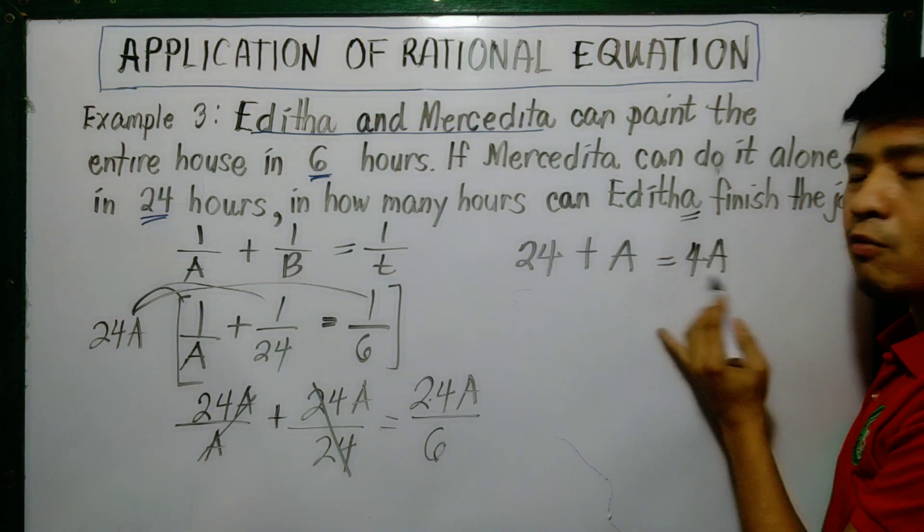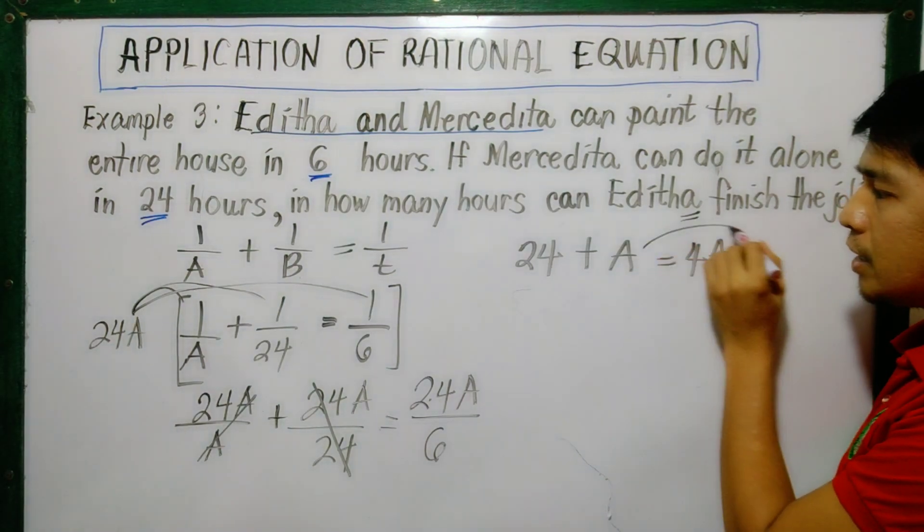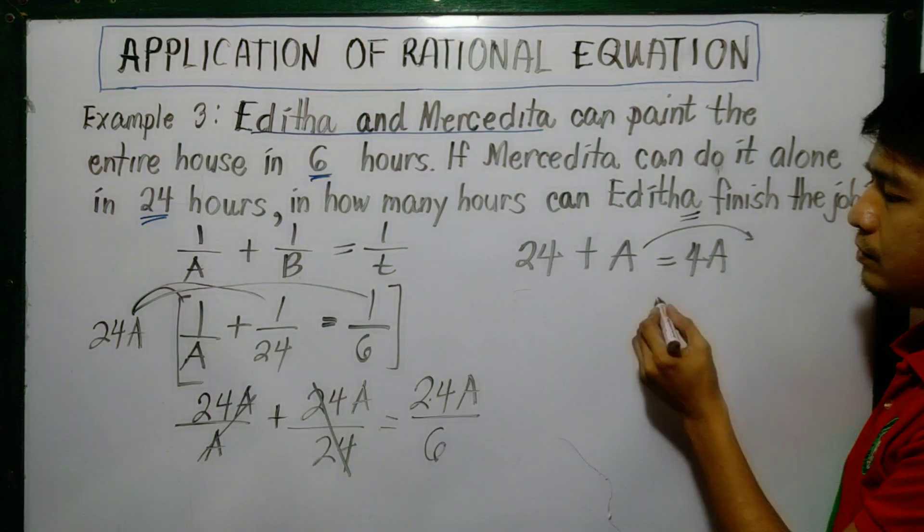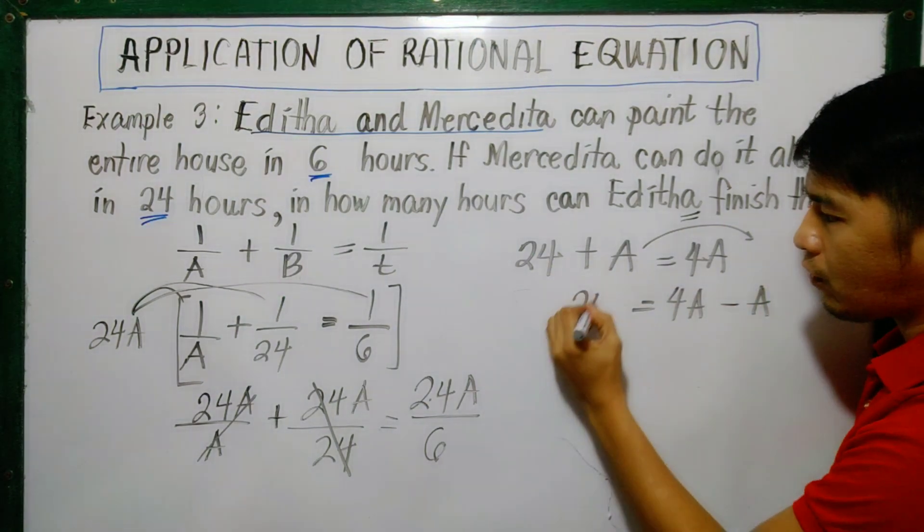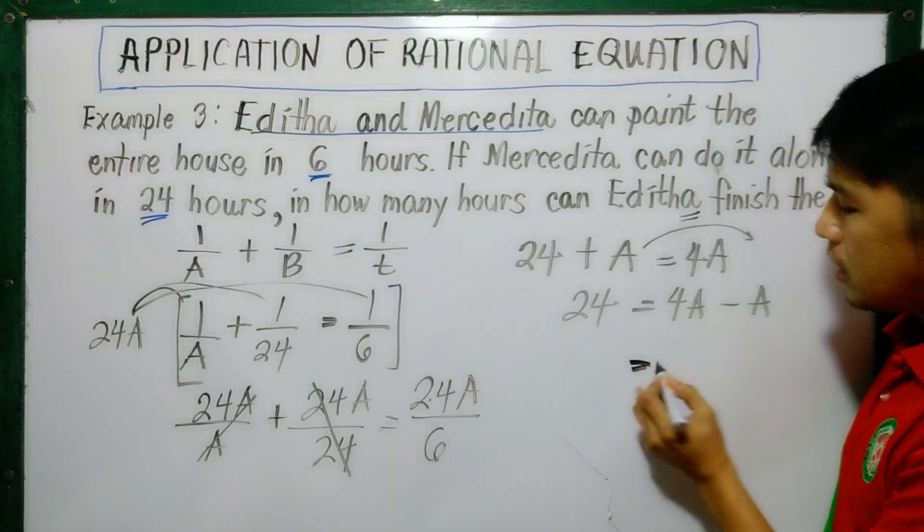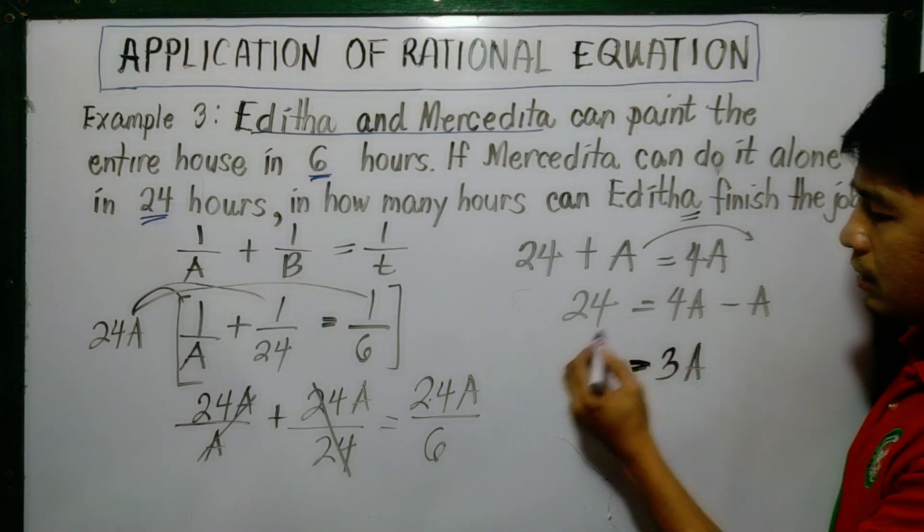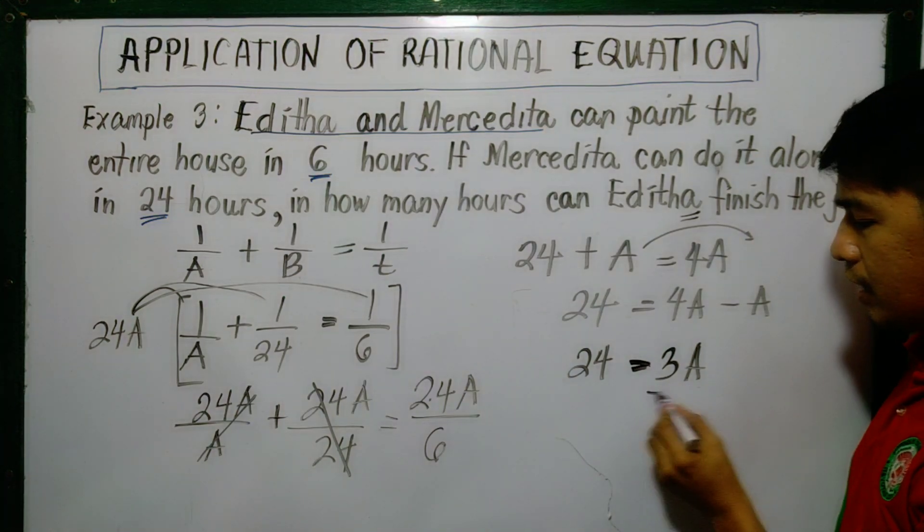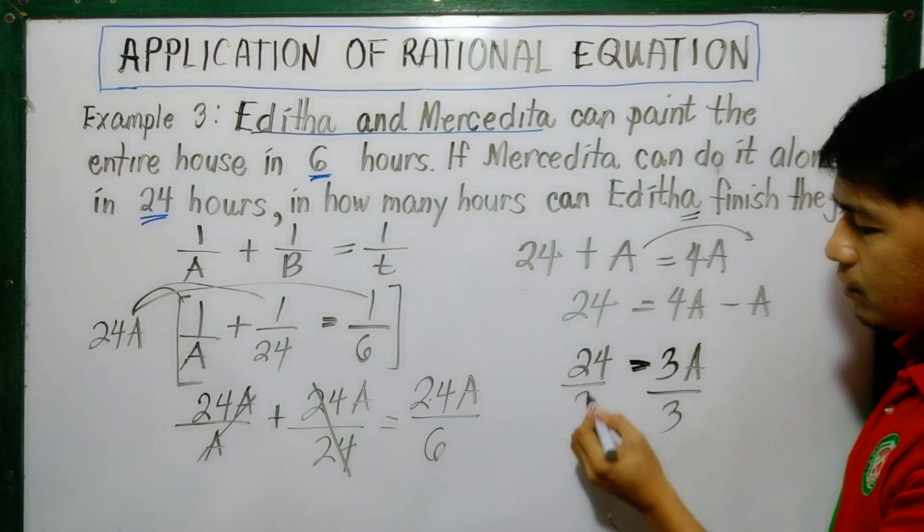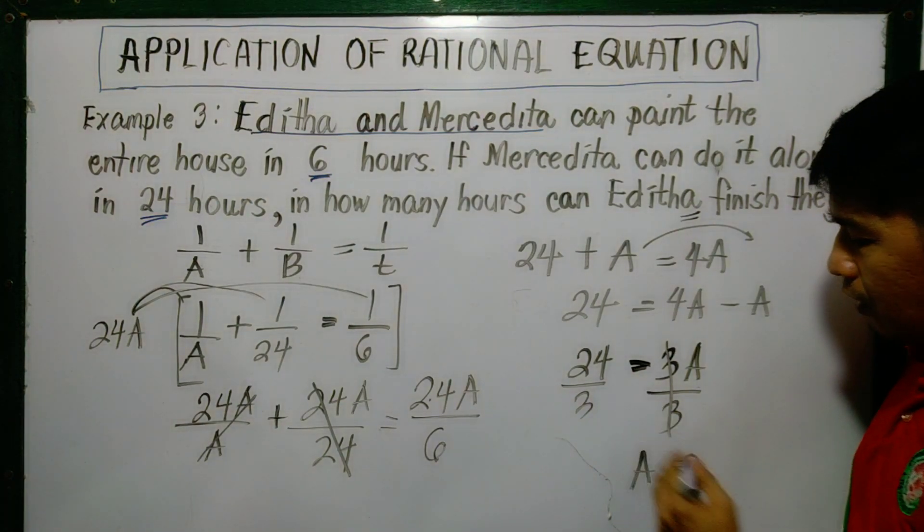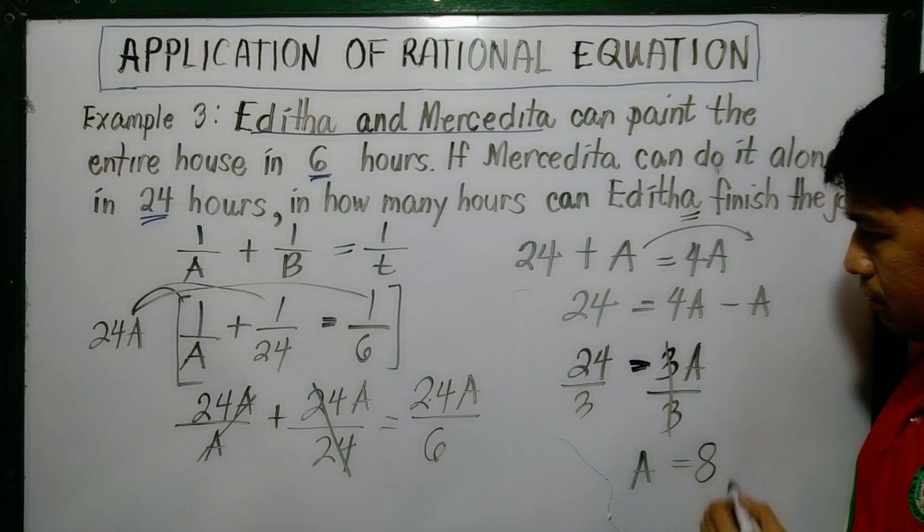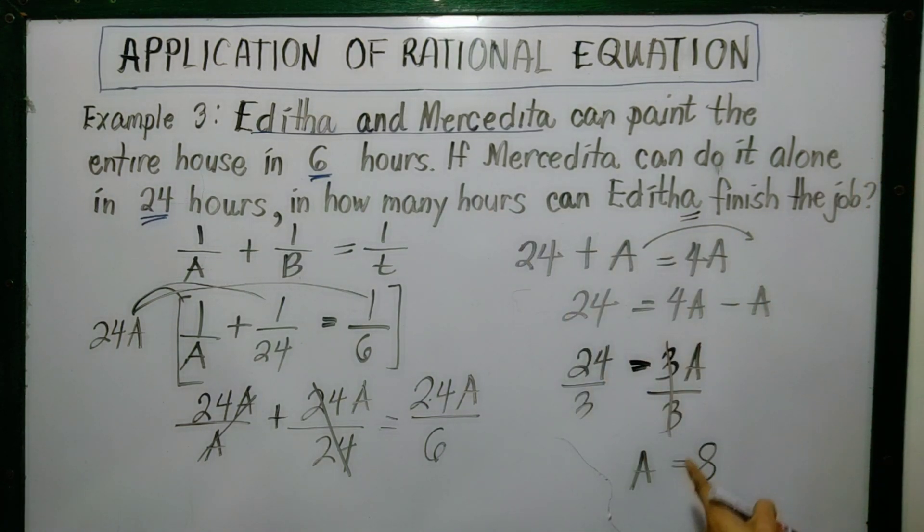So let us solve for A. Combine the A terms, but move this here so they're together. That will become 4A minus A equals 24. 4A minus A is 3A equals 24. Remove 3, divide by 3, divide by 3. Therefore, A now is equal to 24 over 3, which is 8. Therefore, Edita can finish the job in 8 hours. So this is our final answer.